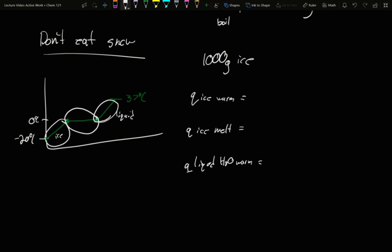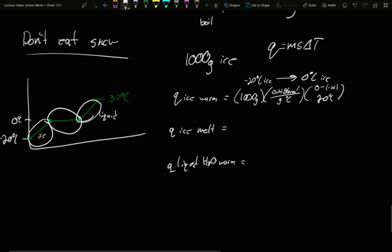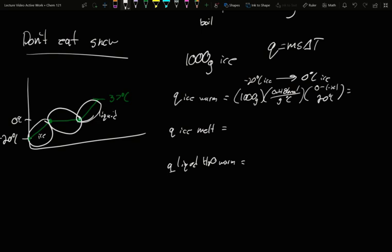Ice warming is going to be Q equals ms delta T. I am ice at the start and I end ice. I'm minus 20 degrees Celsius ice, and I go up to zero degrees Celsius ice. My mass is 1,000 grams. S value for solid ice is 0.486 calorie per gram degree Celsius. My delta T, zero minus negative 20, is a positive 20 change. So 1,000 times 20 times 0.486 equals 9,720 calories. Just heating that ice to zero degrees required just shy of 10,000 calories.